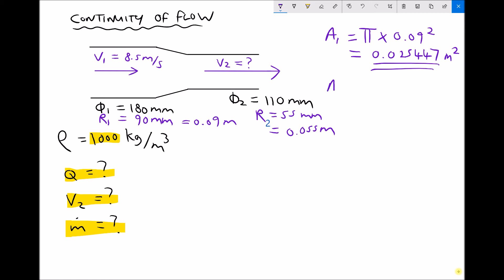Let's repeat for A2. A2 is π times the radius of 0.055 squared. And that gives us again to six decimal places 0.009503 meters squared.